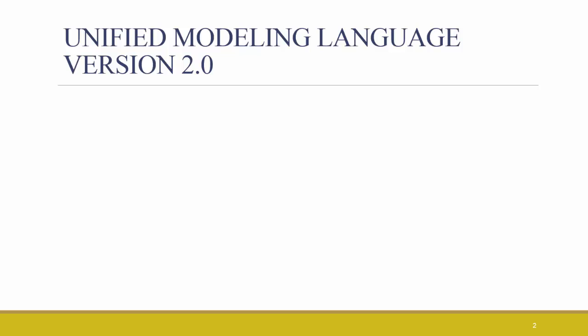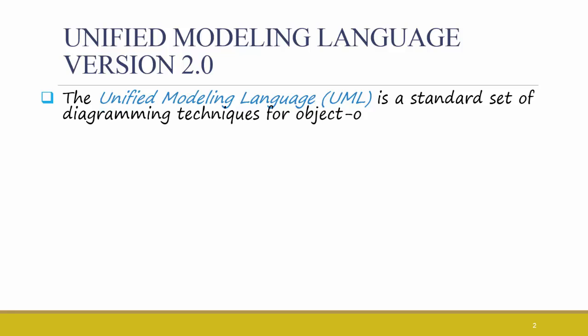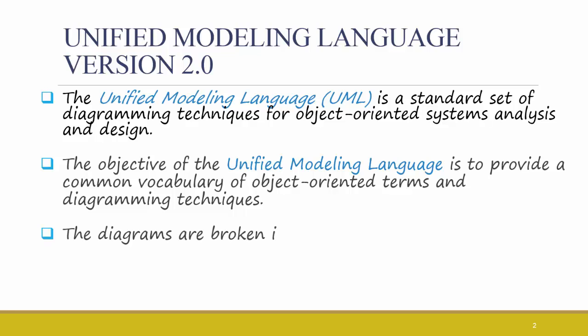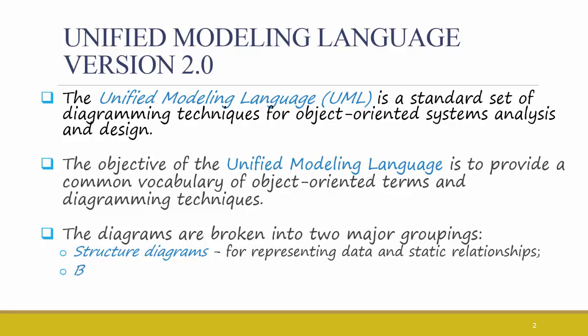The Unified Modeling Language is a standard set of diagramming techniques for object-oriented systems analysis and design. The current version, version 2.0, was approved in the early 2000s. The objective of the Unified Modeling Language is to provide a common vocabulary of object-oriented terms and diagramming techniques. The diagrams are broken into two major groupings: structure diagrams for representing data and static relationships, and behavior diagrams for representing dynamic relationships among the objects.